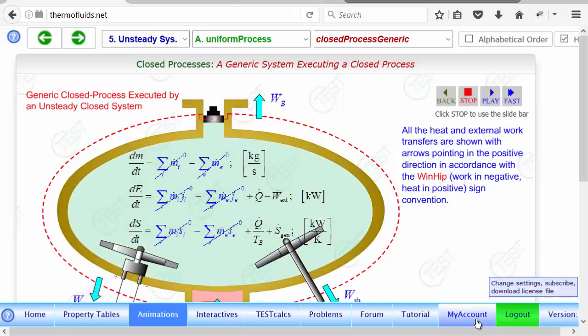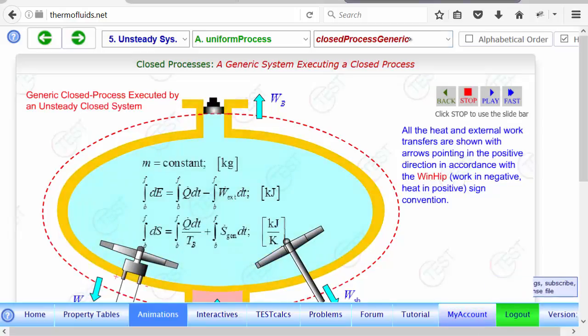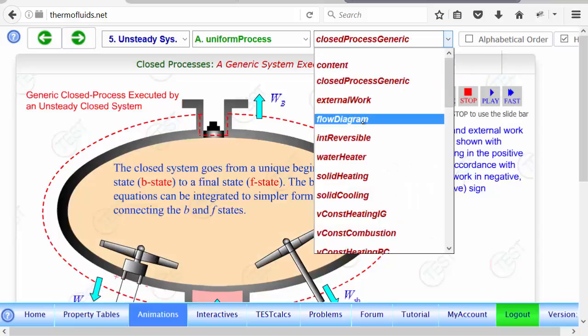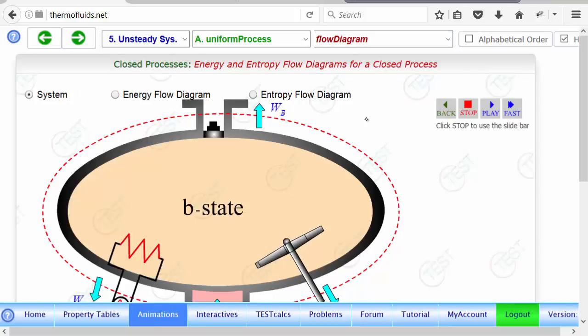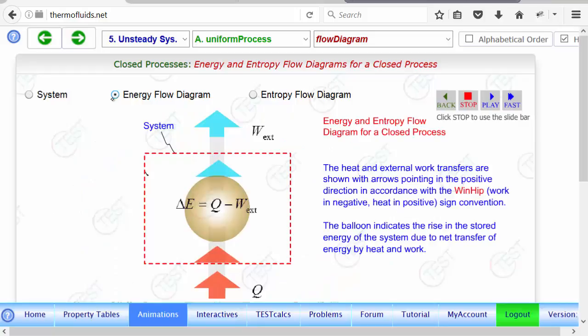Again, the final equations can be visualized through a flow diagram. So, for instance, if you go to the energy flow diagram, that means it shows that within the system how the energy can accumulate because heat is coming in and work is going out. The difference is what is getting accumulated. So, the equation makes immediately physical sense. That is delta E equals Q minus W external. That's our energy equation.